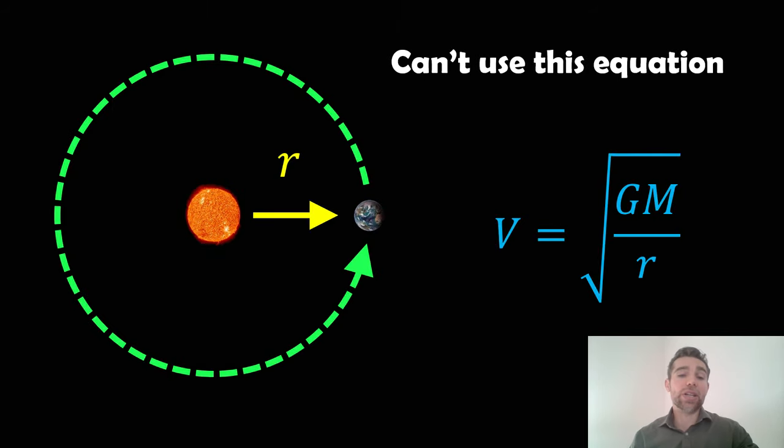We can't use this equation to calculate the orbital velocity. This is for a circular orbit and would be the distance R, which is also the semi-major axis. R and A are the same when it's a circular orbit. M would be the mass of the Sun or the larger object.